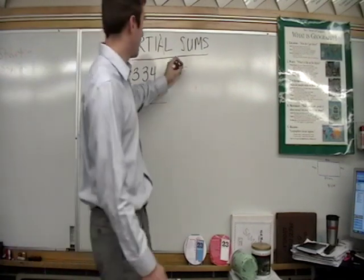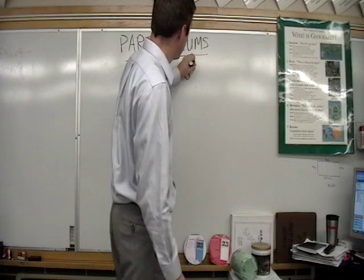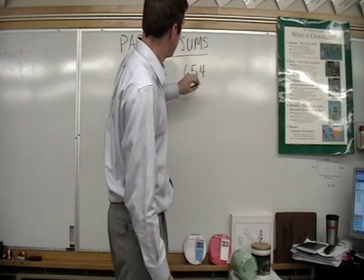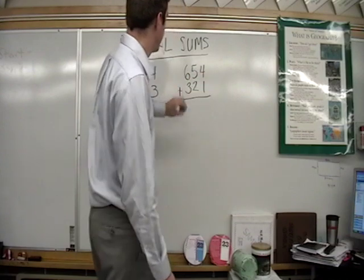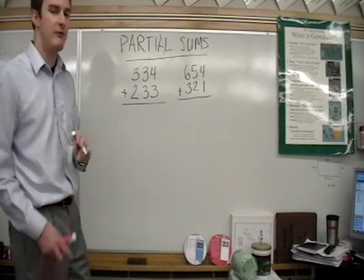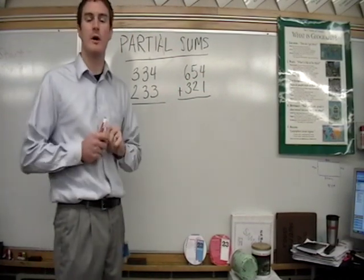That will be your first problem I would like you to solve. Your second problem will be 654 plus 321. So we will add the parts of these sums. You can come back to part 2 and check your answers.